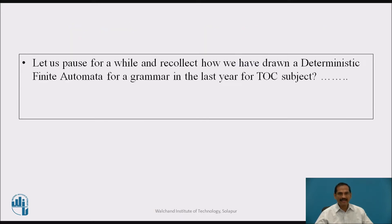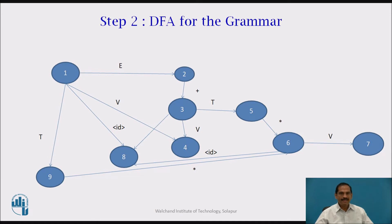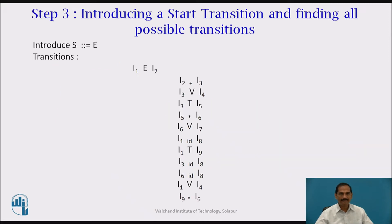Let us pause and recollect how we drew a deterministic finite automaton for a grammar in the Theory of Computation subject. This is the DFA drawn for the grammar given. It consists of nine states and every string in that grammar can be parsed, for example E plus T or T into V. We introduce a new start transition S gives E, leading to the highest non-terminal, and we now have transitions: I1 on input E gives I2, I2 on input plus gives I3, and so on.